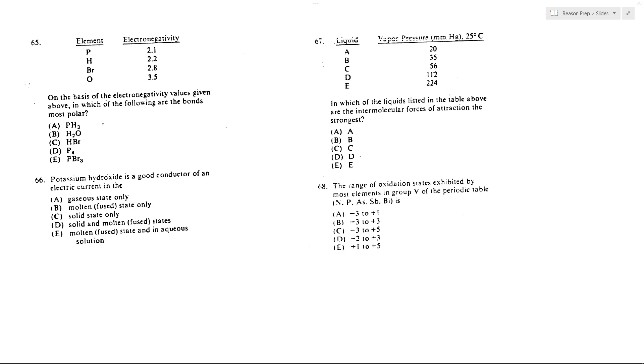So P and H, that would be 2.2 minus 2.1, so we get 0.1. It doesn't matter that there's three P's because we're just looking in each of these cases at the difference of one of the bonds, P to H. So the fact that there's three H's doesn't really matter. We're just looking at that PH difference, so we get 0.1, not great.